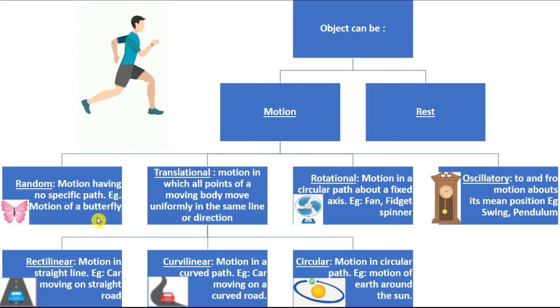The types of motion: first is random motion. You might have seen a butterfly moving along. It doesn't move in a straight line or in a simple curved path. It will completely be in a random motion. Moving in a no specific path is random motion.